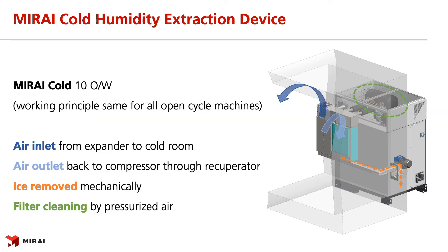Let me explain further the working principle of the Humidity Extraction Device on Mirai Cold 10 open cycle — the working principle is the same for all open cycle machines. The dark blue arrow is the air inlet coming from the expander to the cold room. The light blue arrow is the air outlet passing through the HEED filters back to the machine. The orange dotted arrow is the path of ice being removed from the chamber by conveyor belt to melt naturally outside the chamber. Filters are cleaned by pressurized air as seen in the dotted circle — this air is a totally separate feature from the refrigeration air loop.